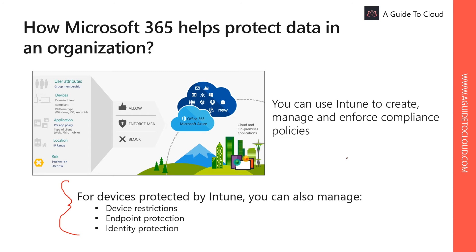For example, a company policy can specify that user passwords must be complex, that local data on the device is encrypted, and that the latest updates are installed. This means a user can access their Microsoft Exchange Online mailbox from any device that meets company policy, but they cannot read their email from a secondary device that does not have the latest update installed. If all other prerequisites are met, the user can access their mailbox from the secondary device after the latest updates are installed. Intune lets you enforce that policy along with conditional access.